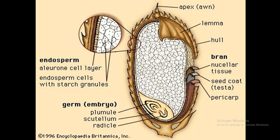Here you can see the diagram. The upper covering is called the bran. It has layers like pericarp, seed coat or testa, and nuclear tissue. It also has the hull and an apex at the top. The endosperm shows a cube-like cell structure, and the germ cell is located at the bottom. It has a part called the scutellum, which acts as a transporter of energy or starch from the endosperm to the germ cell during germination.